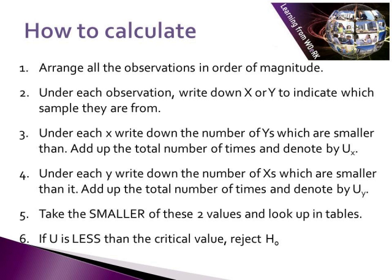To calculate Mann-Whitney, we arrange all observations in order of magnitude. Under each observation we write x or y to indicate which sample they are from — for example, whether they come from the high aspiration sample or the low aspiration sample. Under each x, we write down the number of y's that are smaller than it and add these up to get Ux. Under each y, we write down the number of x's smaller than it and add these up to get Uy. We take the smaller of these two values and look it up in the tables. If the U statistic is less than the critical value, we reject the null hypothesis.